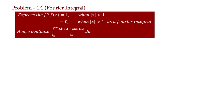The problem is: express the function f(x) = 1 when |x| < 1, and f(x) = 0 when |x| > 1, as a Fourier integral. Hence, evaluate the integral from 0 to infinity of sin(α)cos(αx) / α dα.